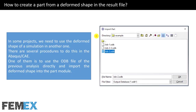I go back to the slides. Finally, I want to talk about how to create a part from a deformed shape in the result file. In some projects we need to use the deformed shape of a simulation in another one. There are several procedures to do this in Abacus CAE. One of them is to use the ODB file of the previous analysis directly and import the deformed shape into the Part Module. Another procedure is to define a predefined field from the Load Module and define an initial state for the part. I go to Abacus to import the deformed shape from Job 2. First, I must set the file filter to ODB and then select the ODB file from its location.